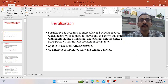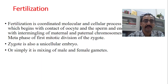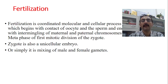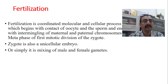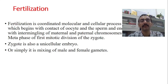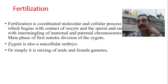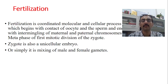The question comes: what do you mean by fertilization? Fertilization is a coordinated molecular and cellular process which actually begins with the contact of the oocyte and the sperm. It is not a random process — rather it is a coordinated process. There are so many molecular processes taking place, as well as so many cellular processes taking place.